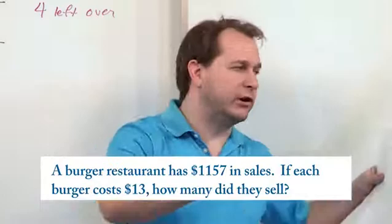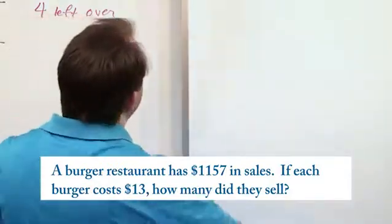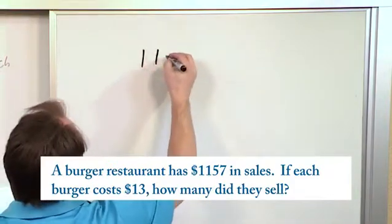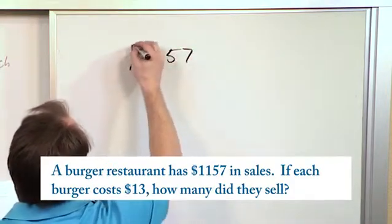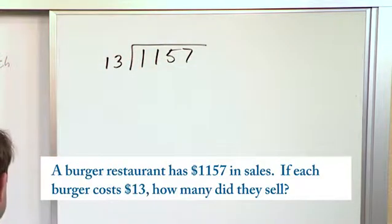This is a division problem. We have a large amount of money. We know how much each burger costs, so now we want to divide to find out how many burgers we sold. $1,157. We're dividing by the $13 burger to see what it is.